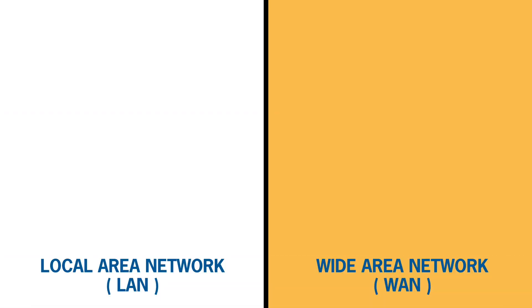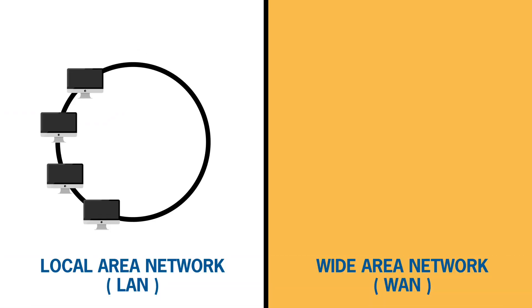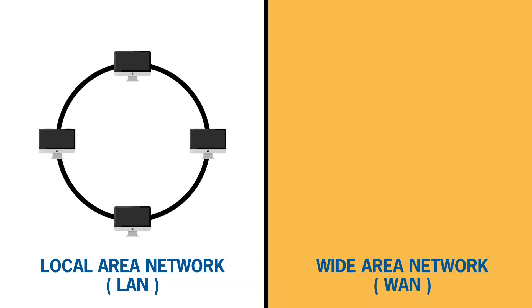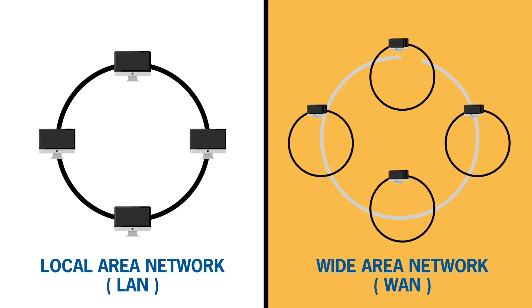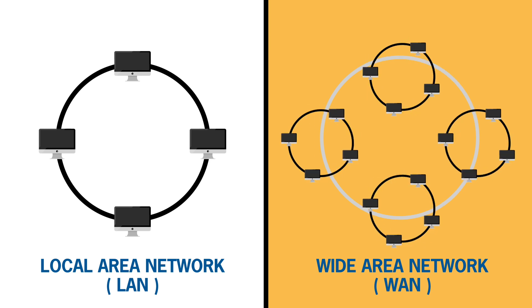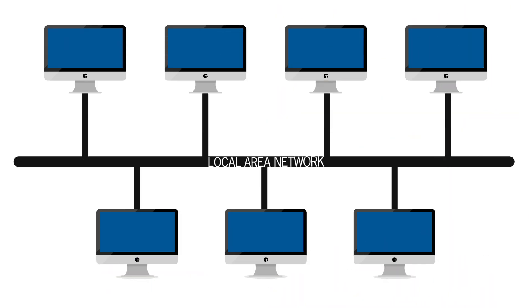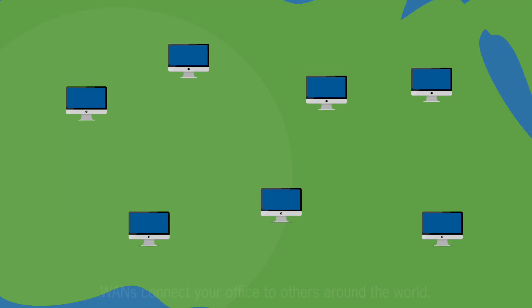Let's start from the top. There are two primary types of networks: Local Area Networks, or LANs, and Wide Area Networks, or WANs. LANs connect devices inside your office together, while WANs connect your office to others around the world.